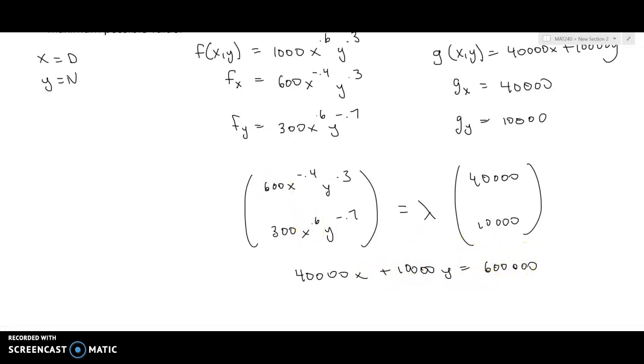So we really have three equations here. We have the first equation, which says that 600x^(-0.4)y^(0.3) equals λ times 40,000, and 300x^(0.6)y^(-0.7) equals λ times 10,000, and equation 3 is our constraint to make sure that we remain on the constraint curve. So we need to solve three equations for x and y. And that point that we get is what we're going to refer to as the critical point (x₀, y₀).